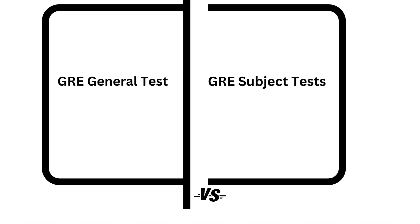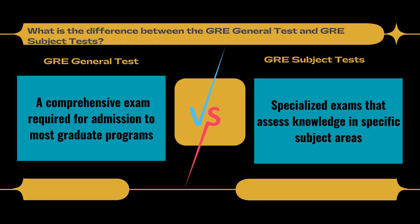What is the difference between the GRE general test and GRE subject tests? The GRE general test is a comprehensive exam required for admission to most graduate programs, while GRE subject tests are specialized exams that assess knowledge in specific subject areas. The subject tests are typically required for admission to certain specialized graduate programs.